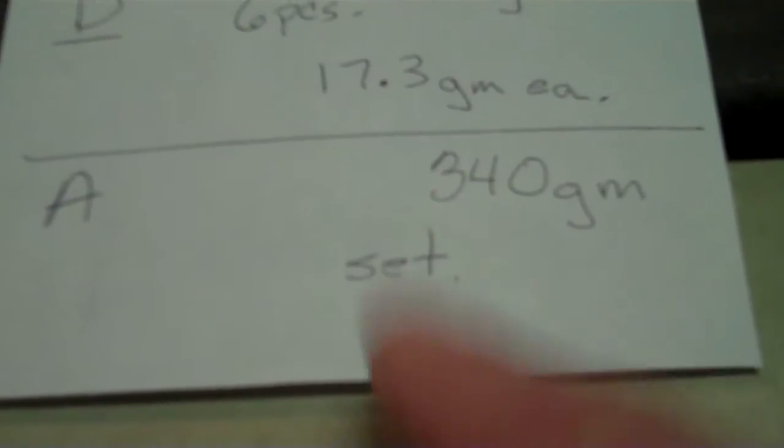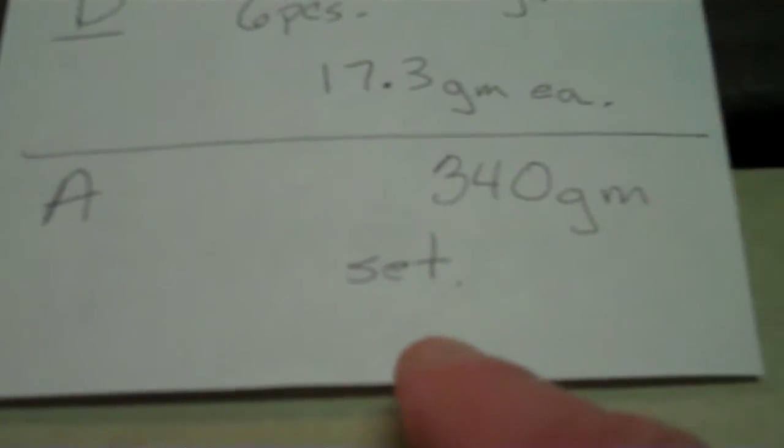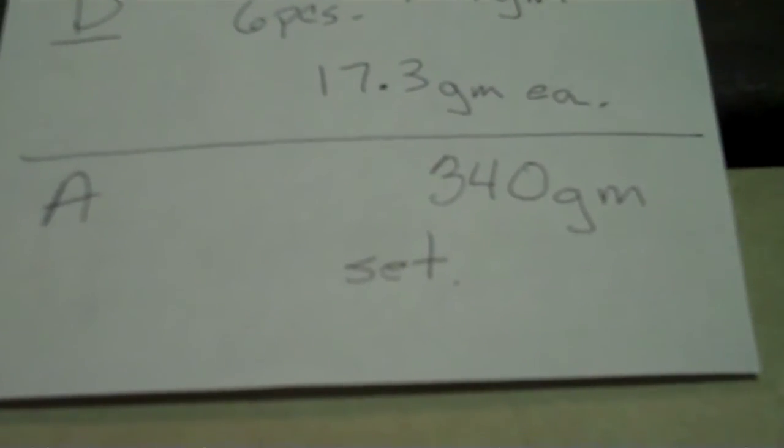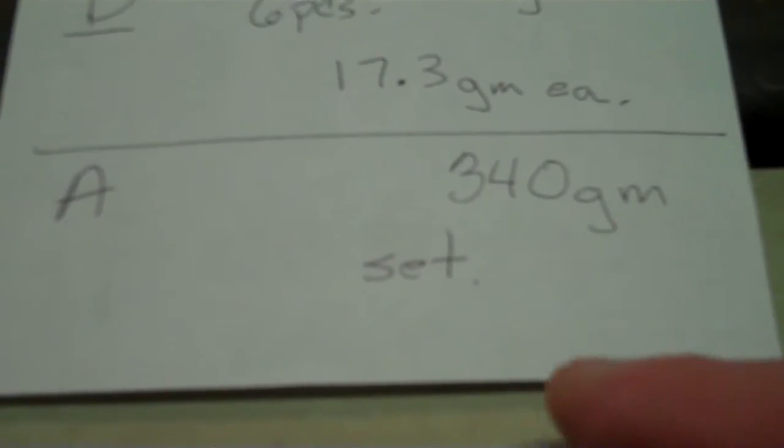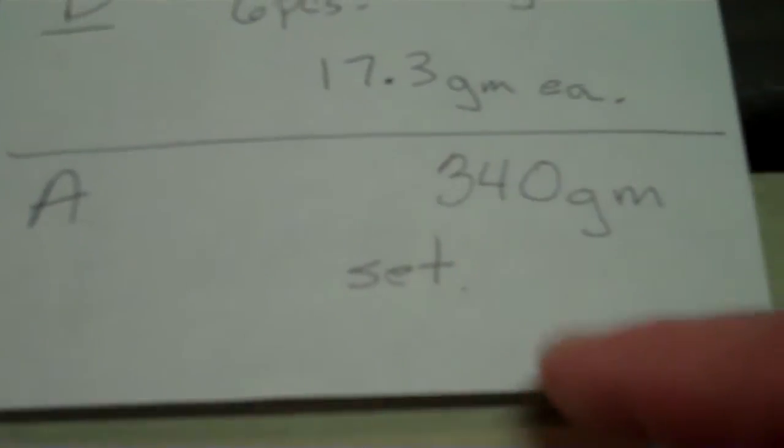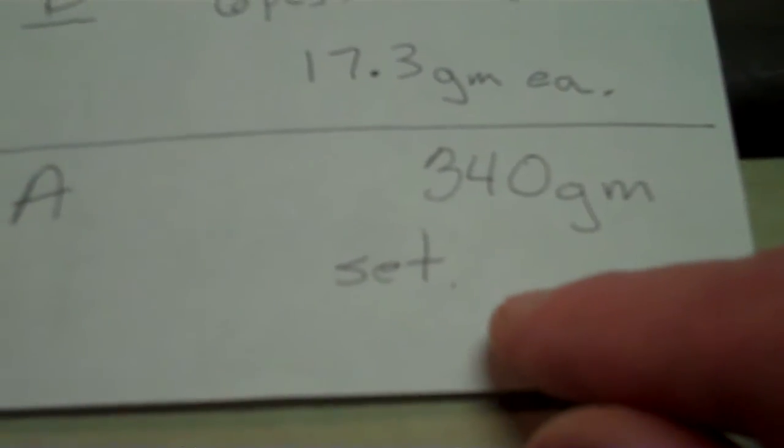Anyhow, Lot A. One set of the candelabras, three candlesticks each. Those were a Gorham set. I gave you the numbers there. You can look back at it. Anyhow, 340 grams. So I don't know what that is today. Roughly 300 bucks maybe.